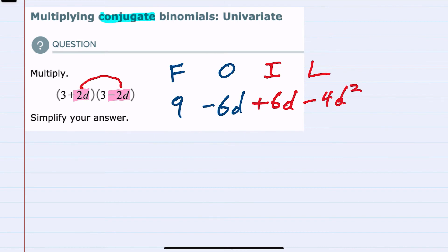And this is where the fact that these two are conjugates come into play because whenever I simplify my answer, since they are conjugates, these outer and inner terms will always be the same, but with different signs. So when combined, they will cancel each other out, leaving us with just the 9 and the minus 4d squared.